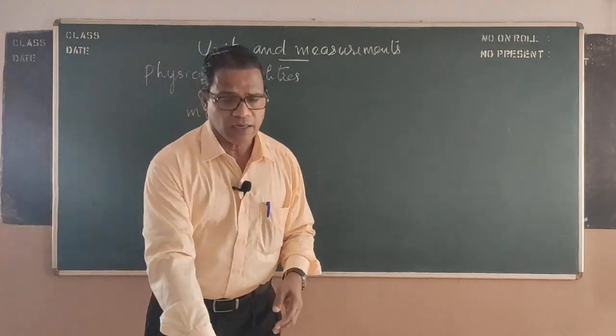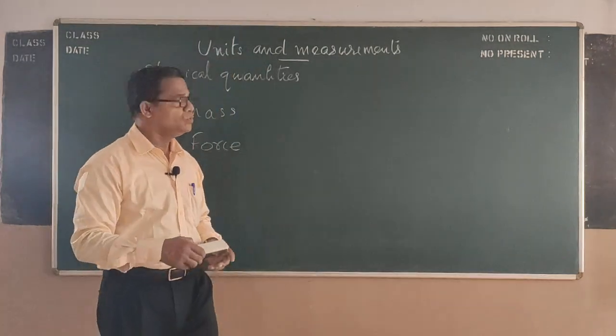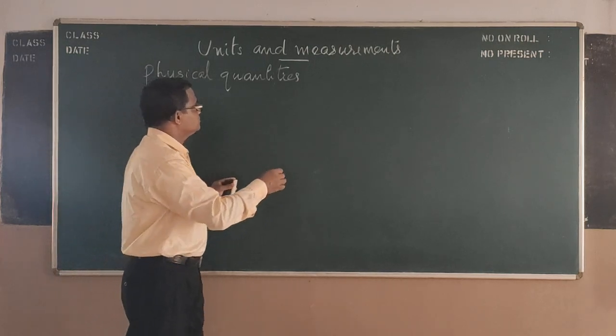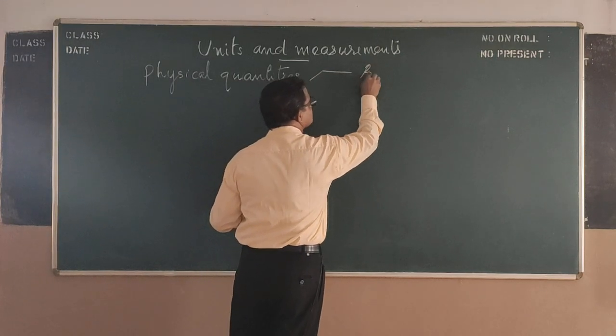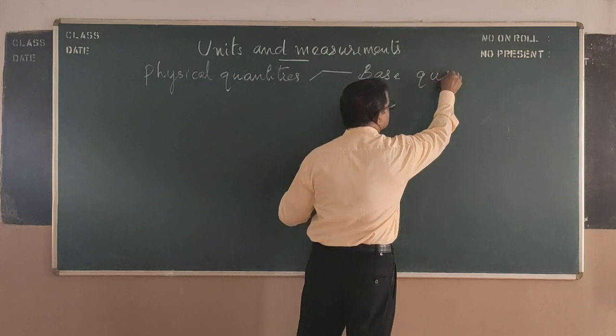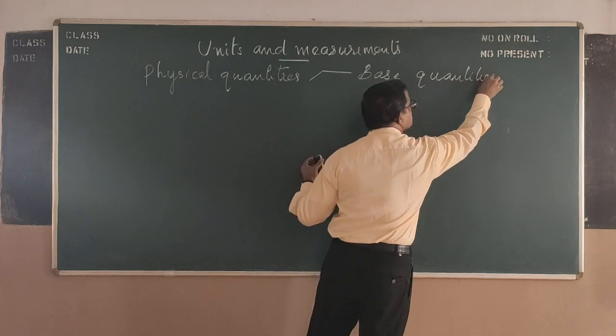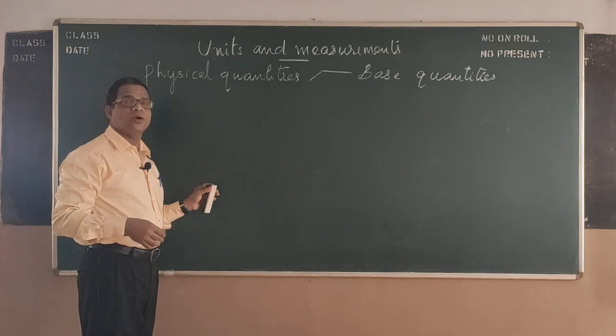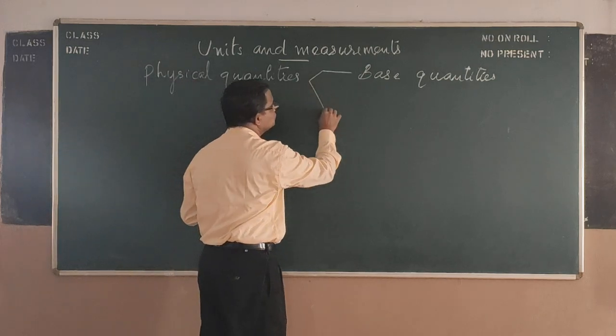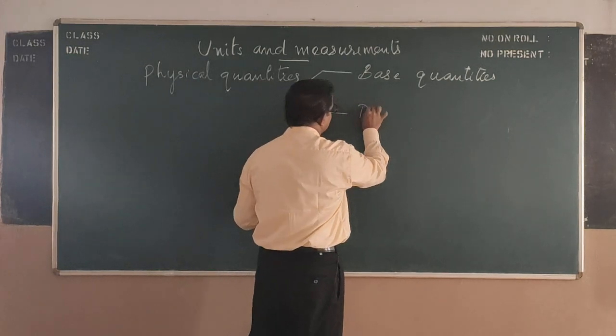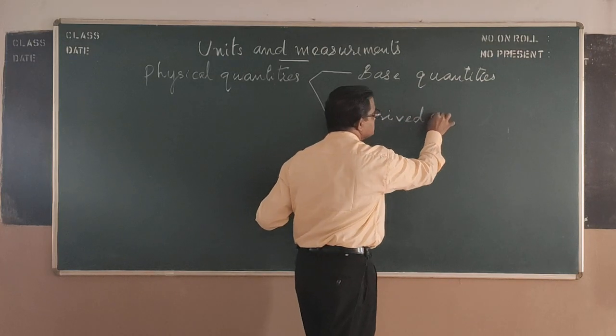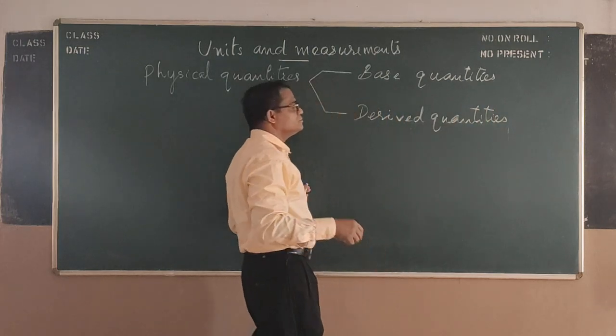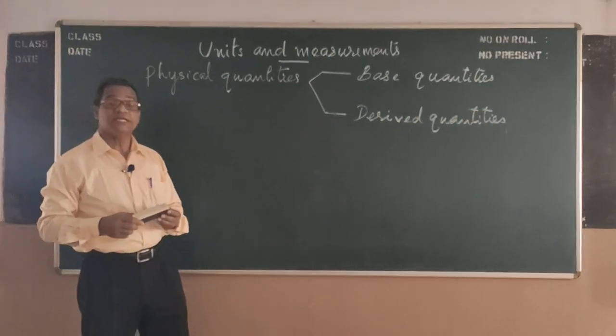So, understood what are physical quantities. And these physical quantities are divided into basically two categories. They are: base quantities or fundamental quantities, and derived quantities.